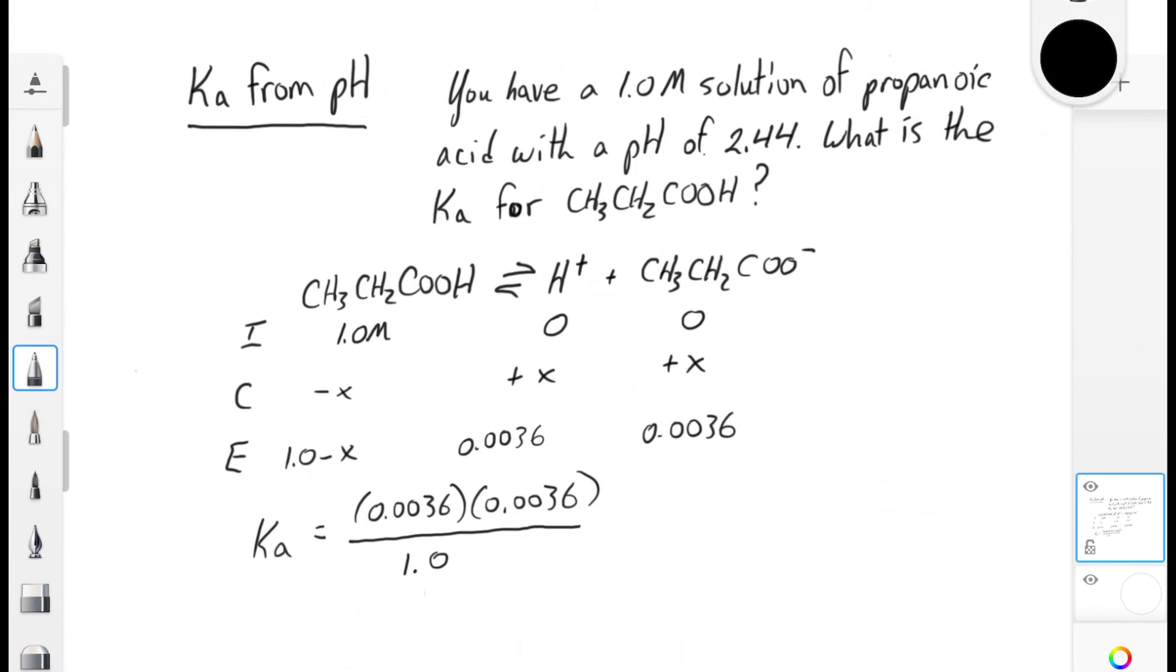When you write the Ka expression and you include the equilibrium concentration for propanoic acid, 1.0 minus 0.0036 molar, within our level of significance, that value is effectively the same as the initial concentration, 1.0 molar. When you solve that calculation, you find that the Ka value for propanoic acid is 1.3 times 10 to the minus 5.